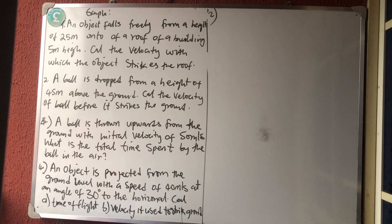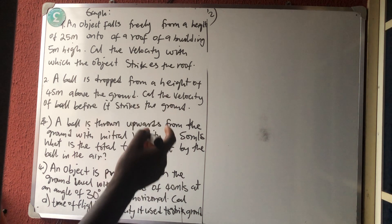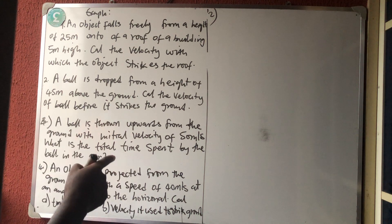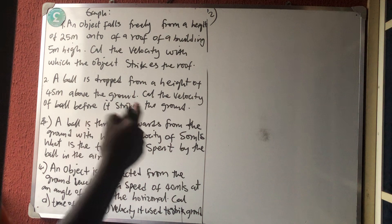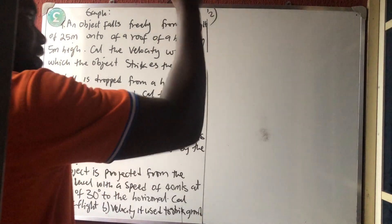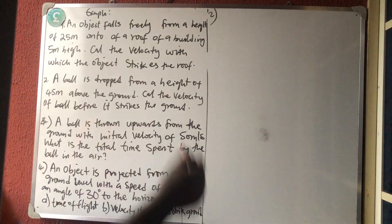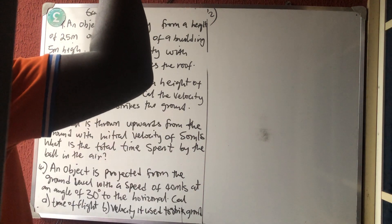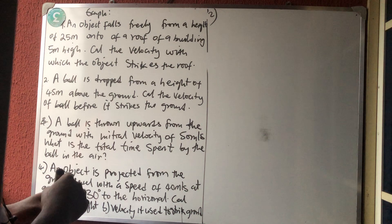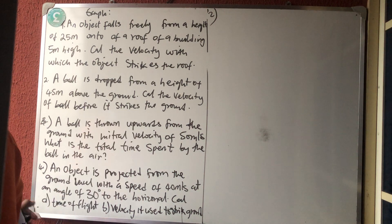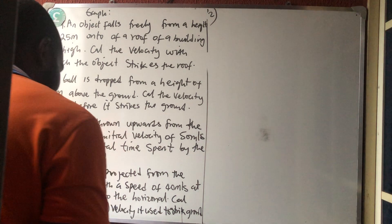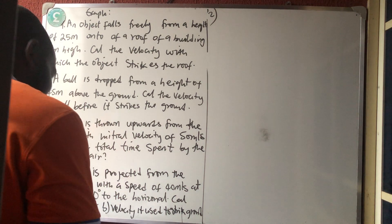Number 3 says a ball is thrown vertically upward. They ask us to calculate the time spent by the ball in the air. That is not just the time to reach maximum height — because if you throw it up, it will still come down. The time spent in the air is the total time, which is the time of flight.